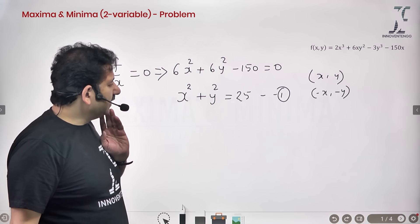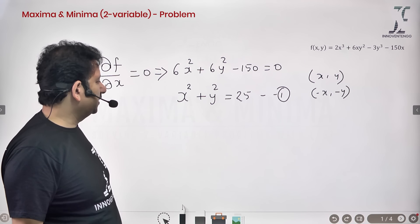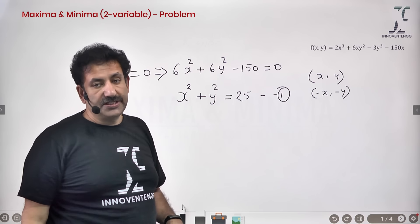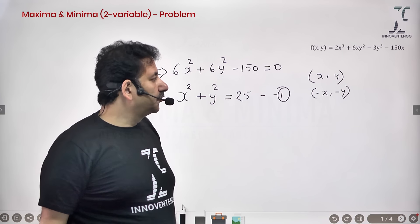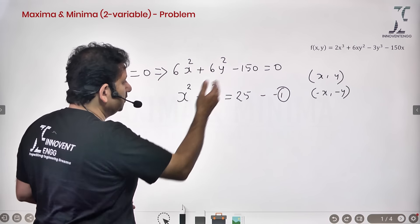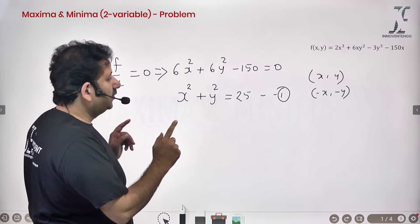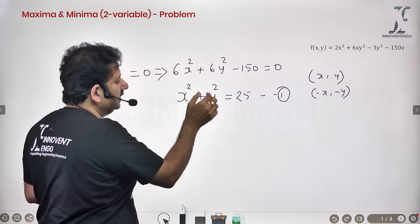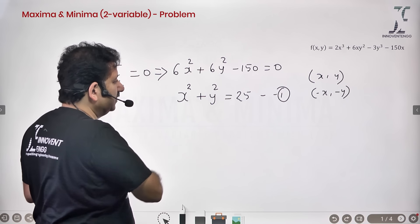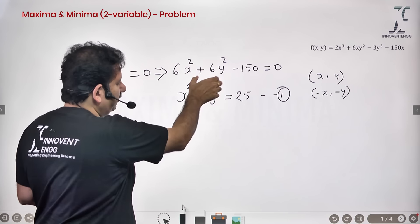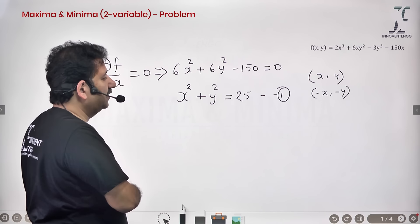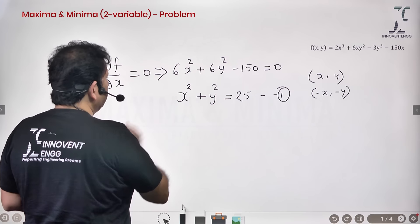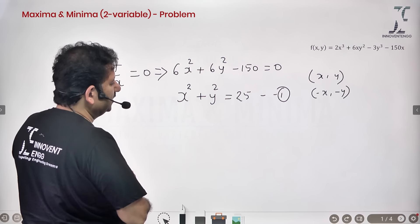I can use the simplified function — dividing throughout by 6 gives x² + y² - 25 = 0. I can directly use that to construct my Hessian, that is, use that function to evaluate my second derivatives and hence construct my Hessian. That would not affect the nature of the determinant, because every term that enters the Hessian would be factored by the same constant. So whether you divide by 6 or use the original equation and follow the regular procedure, it does not matter.